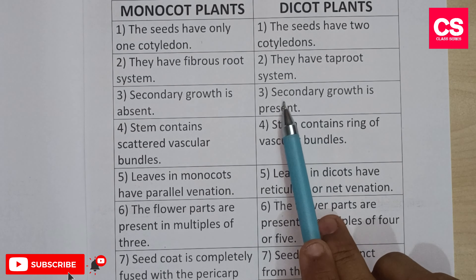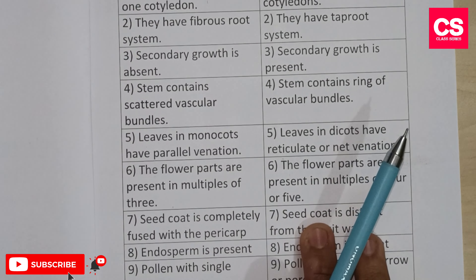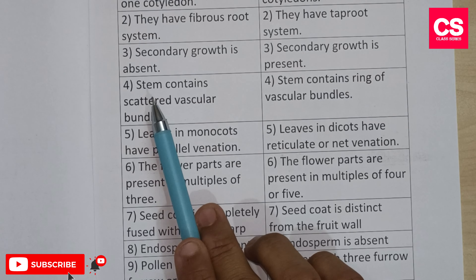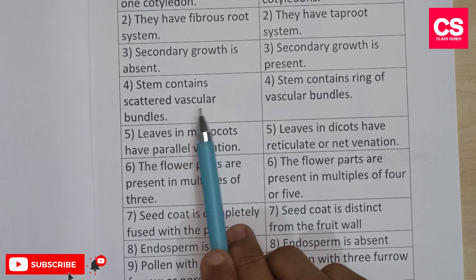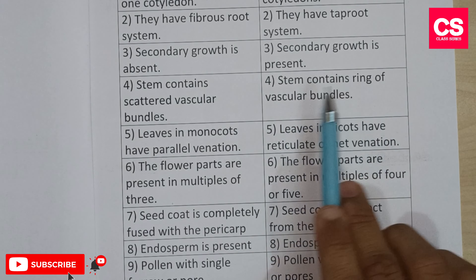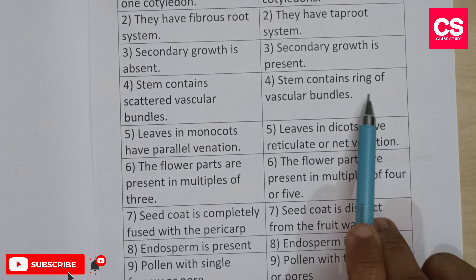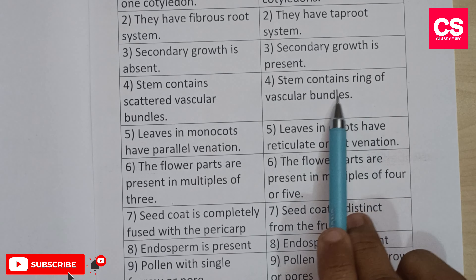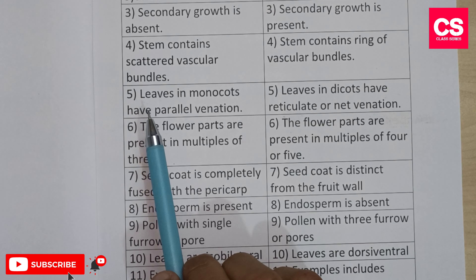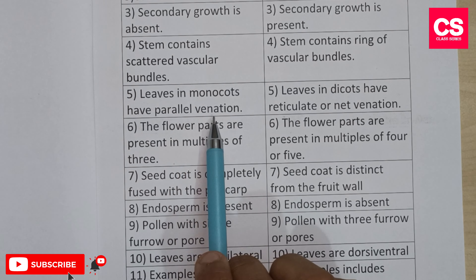But dicot plants have secondary growth — secondary growth is present. The fourth difference: in monocot plants the stem contains scattered vascular bundles, while in dicot plants the vascular bundles are arranged in rings.